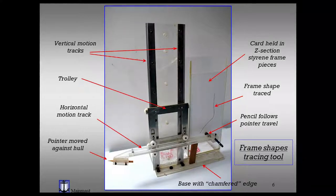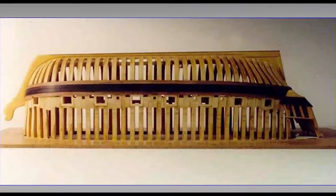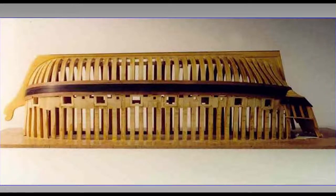Having developed the half frame shapes I then proceeded to use them to make sistered frames following the Harm method. This method is well known so I will not describe it further, but the result shows all the frames with their extensions on the framing jig, together with the wales, gun ports, and rope ports in position.